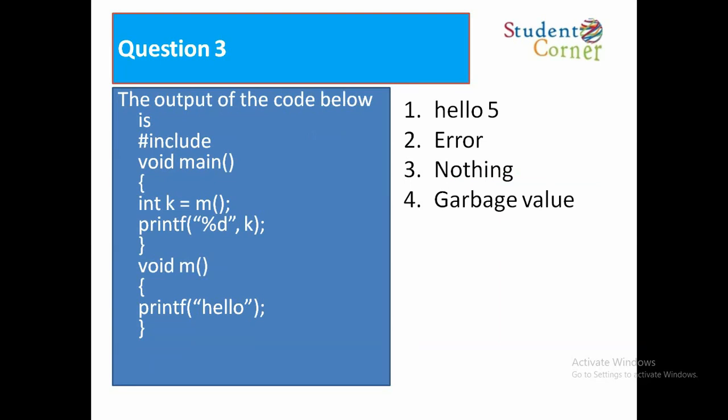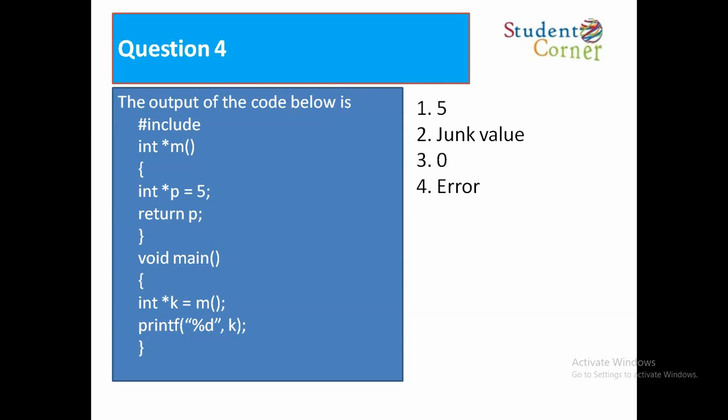Question number 3: The output of the code below is hash include void main, int k is equal to M, printf percentage dk. Void M, printf hello. Option 1: hello 5, option 2: error, option 3: nothing, option 4: garbage value. The answer is hello 5.